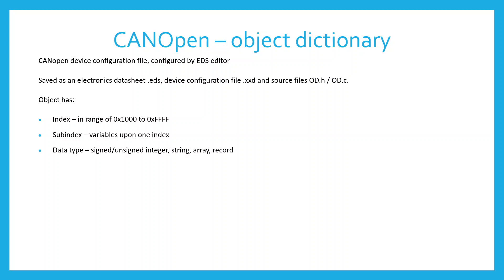Each object has a data type. There are data types for a single variable such as signed integer or unsigned integer of different bit lengths, and for multiple variable transfer there is an array type for variables of the same data type, or a record which is a structure of different types of variables.